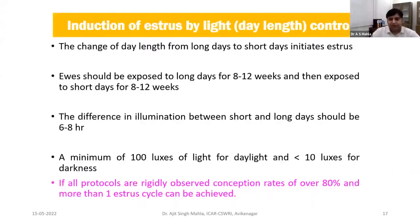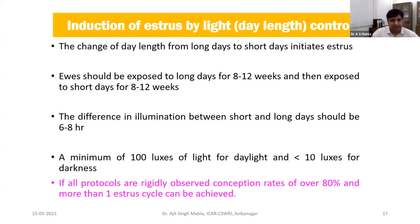Another approach is to induce estrus by changing day length. Sheep and goat are seasonal short-day breeders in the temperate region. When we decrease the day length, there are more chances they come into estrus. We expose females for around 2–3 months to longer light, then reduce the duration of light for another 2–3 months. This simulates the natural phenomenon when nature decreases the light period, inducing estrus, and we can synchronize animals this way.